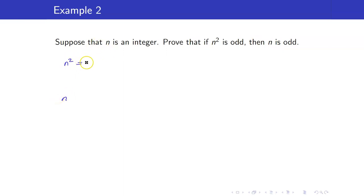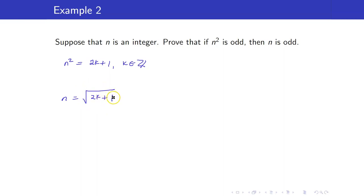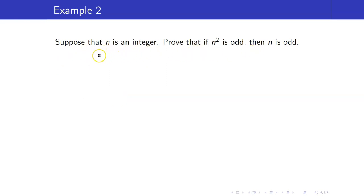Because if you proceed by direct proof, you would have N squared equals 2K plus 1. How will you get N? You would have square root of 2K plus 1, and just like in example 1, this doesn't even look like an integer. So hence, we prove the contrapositive. What is the contrapositive? Show that if N is even, then N squared is even.